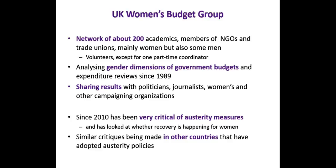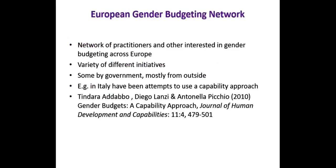The group can be critical of any type of government — in the last 30-plus years there are many things that need changing to achieve better gender equality. Since 2010 the level of critique increased sharply because of the policies implemented, which have affected women much more. This is not just in the UK — other countries applying austerity have pronounced gender effects for the same reason: women rely more on public services and social security. There is also the European Gender Budgeting Network, which analyses economic and fiscal policy from a gender point of view.